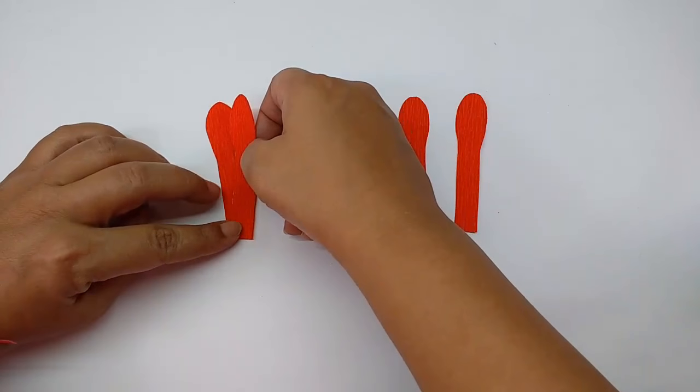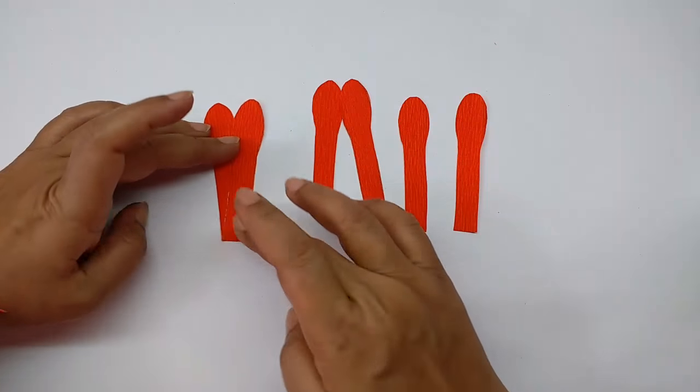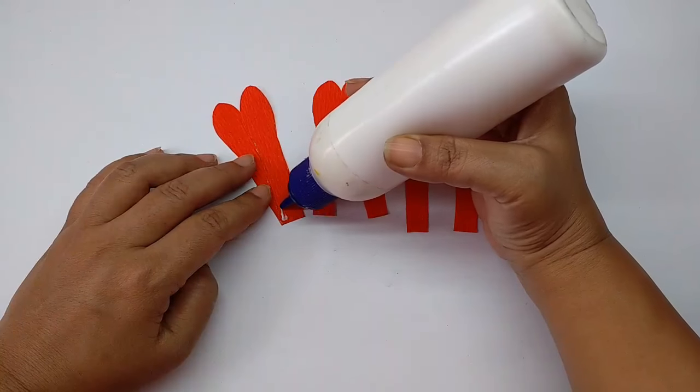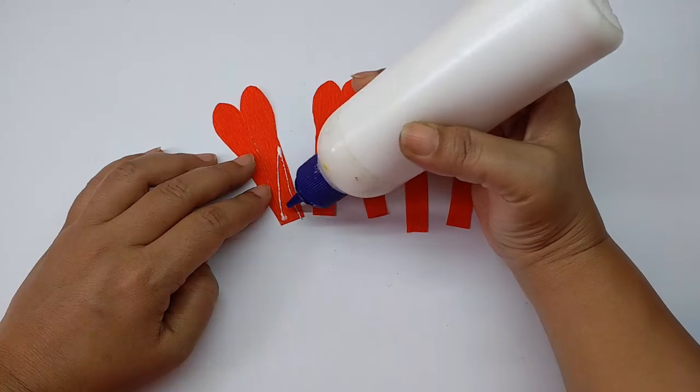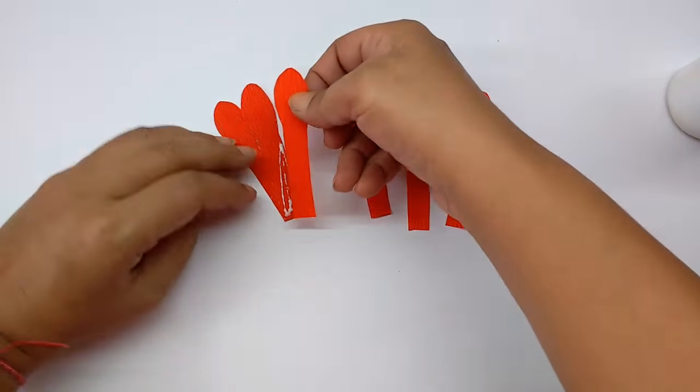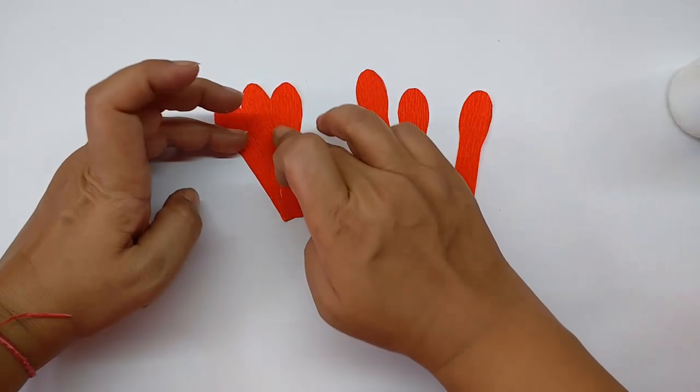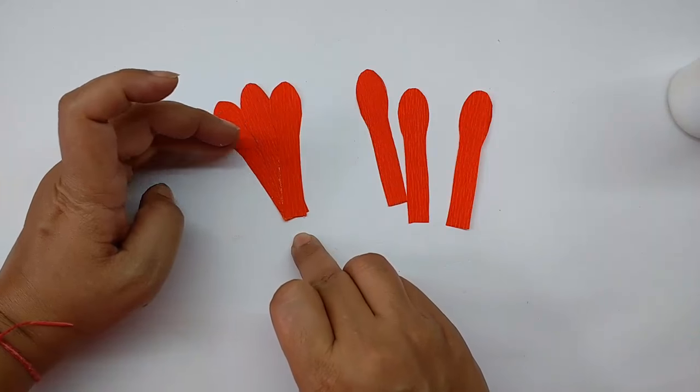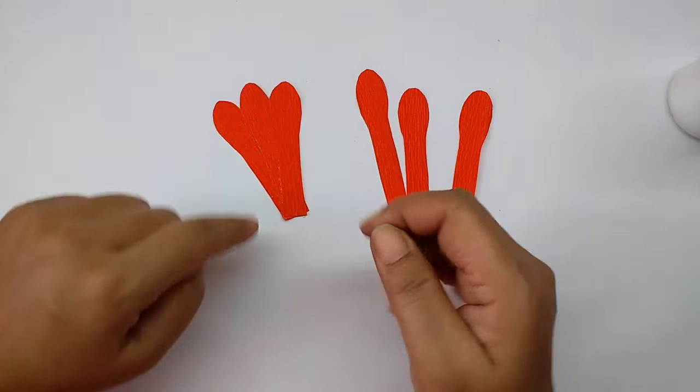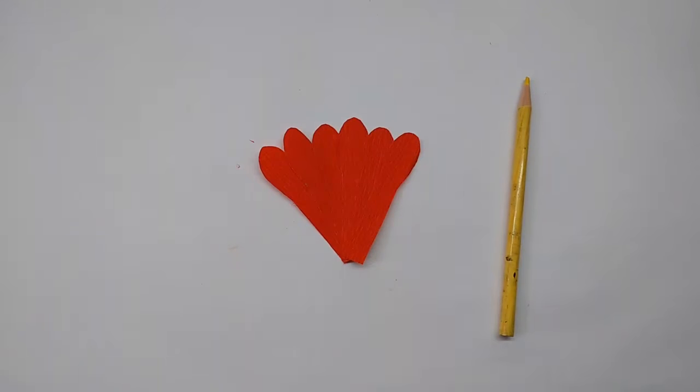Apply glue in the same way at a slant and stick the next petal on it. At the bottom keep the same height, same length of the petal, so that on top they are slightly higher, lower, higher, lower like that. Stick all the six petals like this.